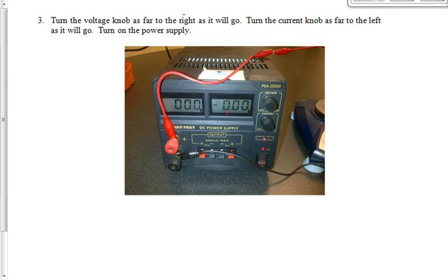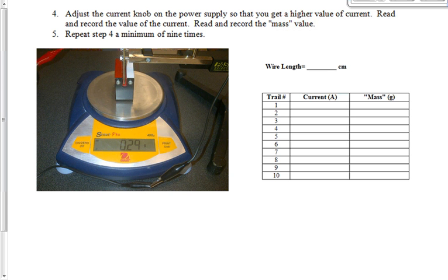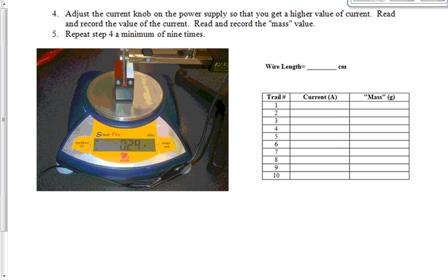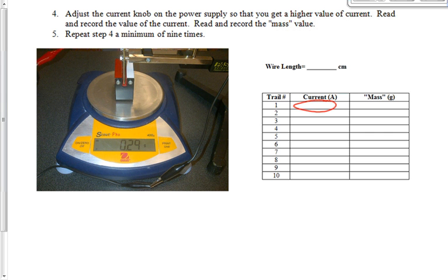But in part one, we're going to manipulate the electric current. We're going to change the electric current and see how the magnetic force responds to that electric current. So, at this point, you're going to adjust the current knob to the right so that the current on the power supply reads something other than zero. That value should go up as you turn the current knob to the right. I want you to record the value of that current as the first box in your table. You've already recorded the length of the wire. It should be 8.4 centimeters.